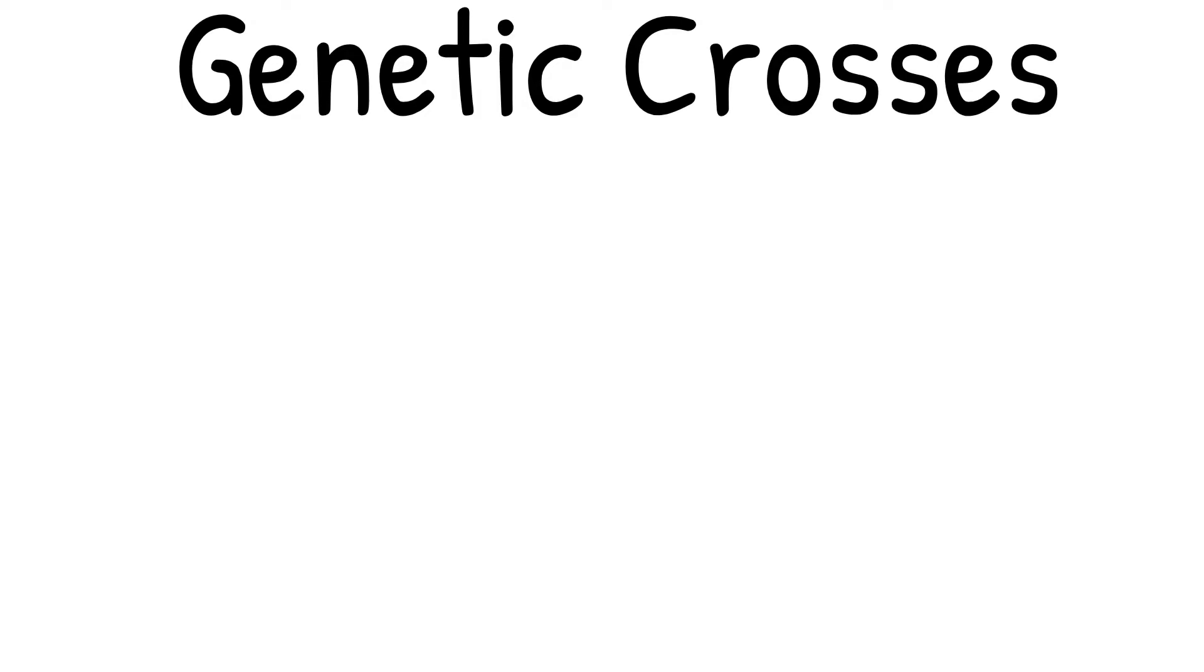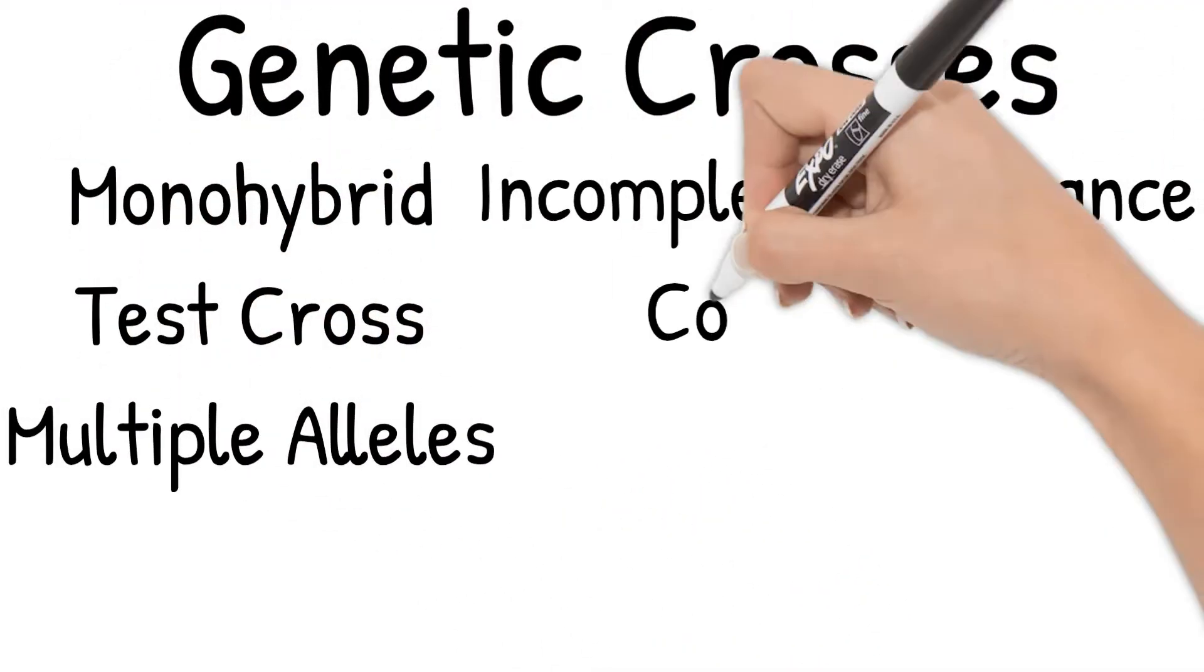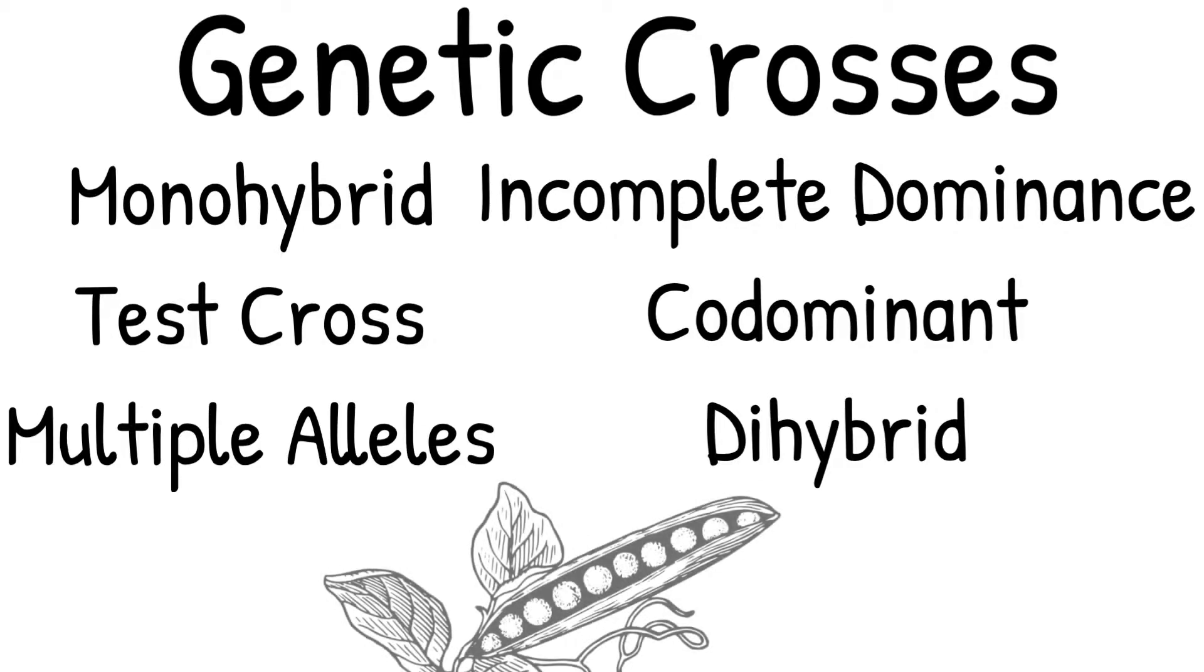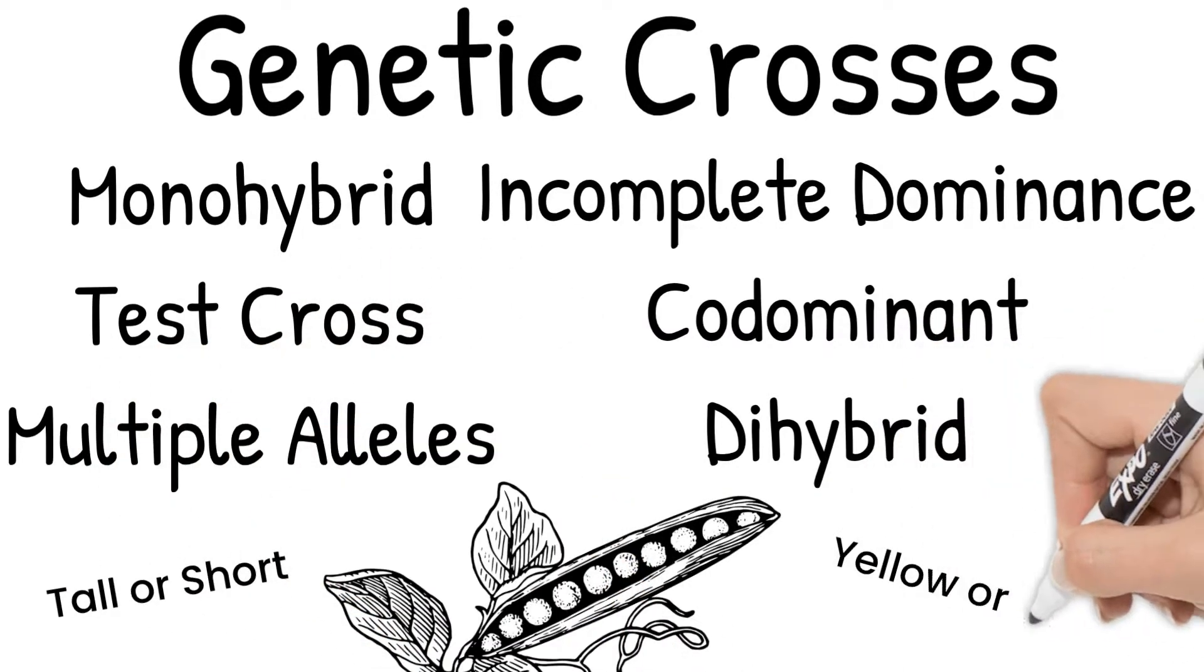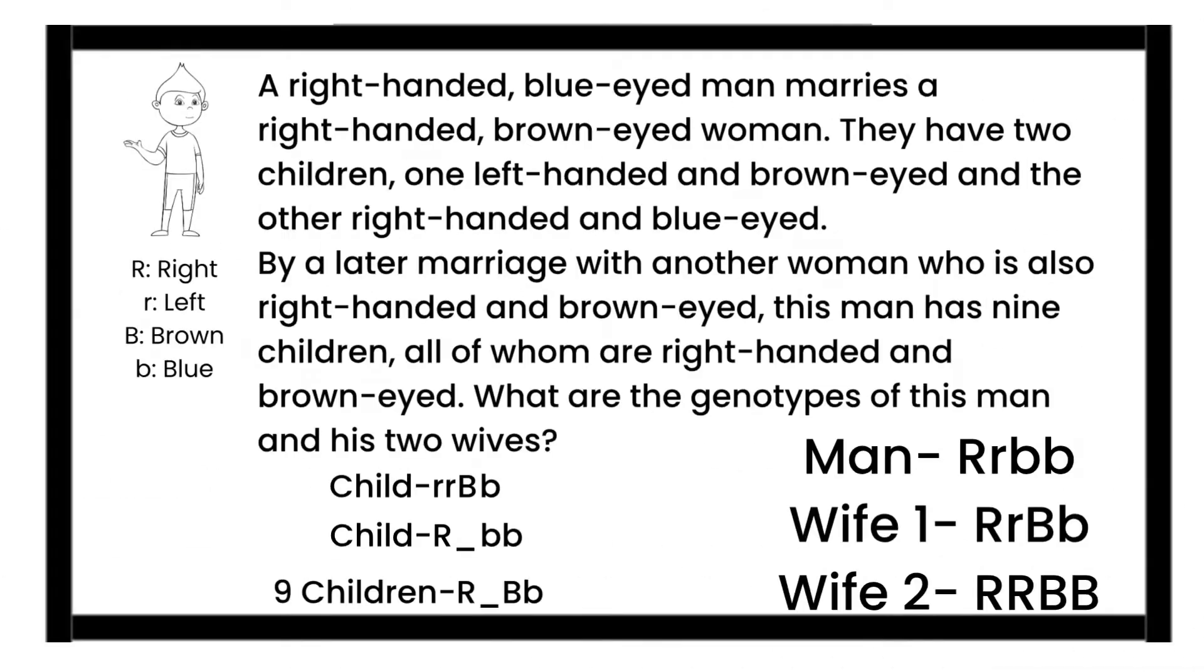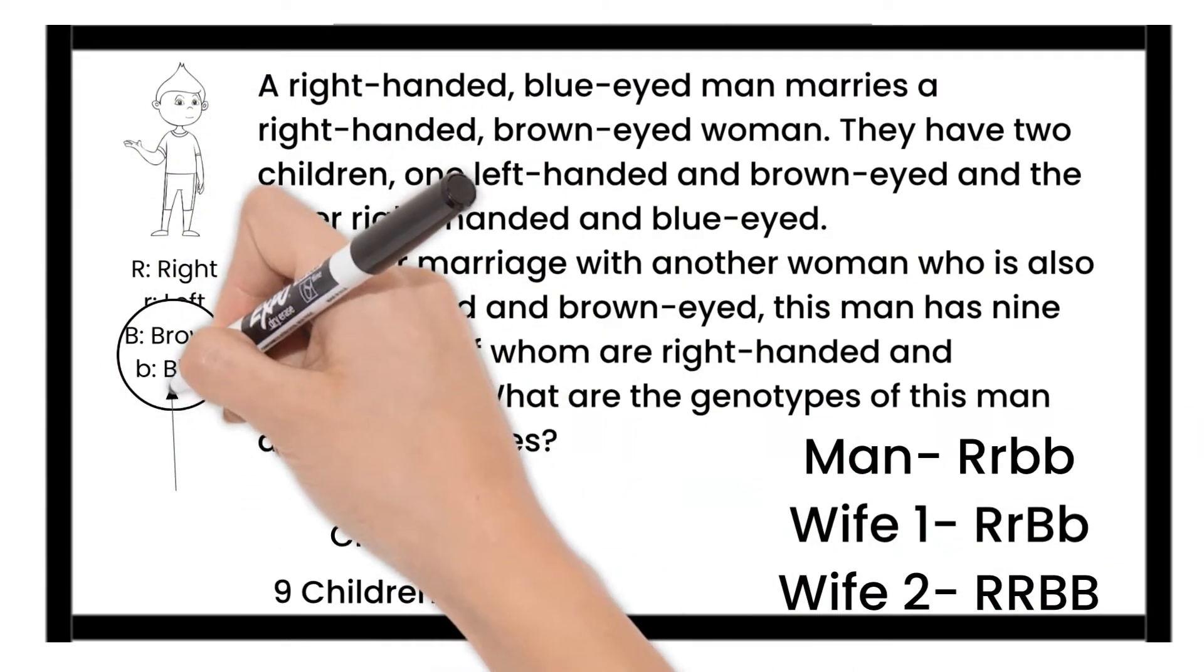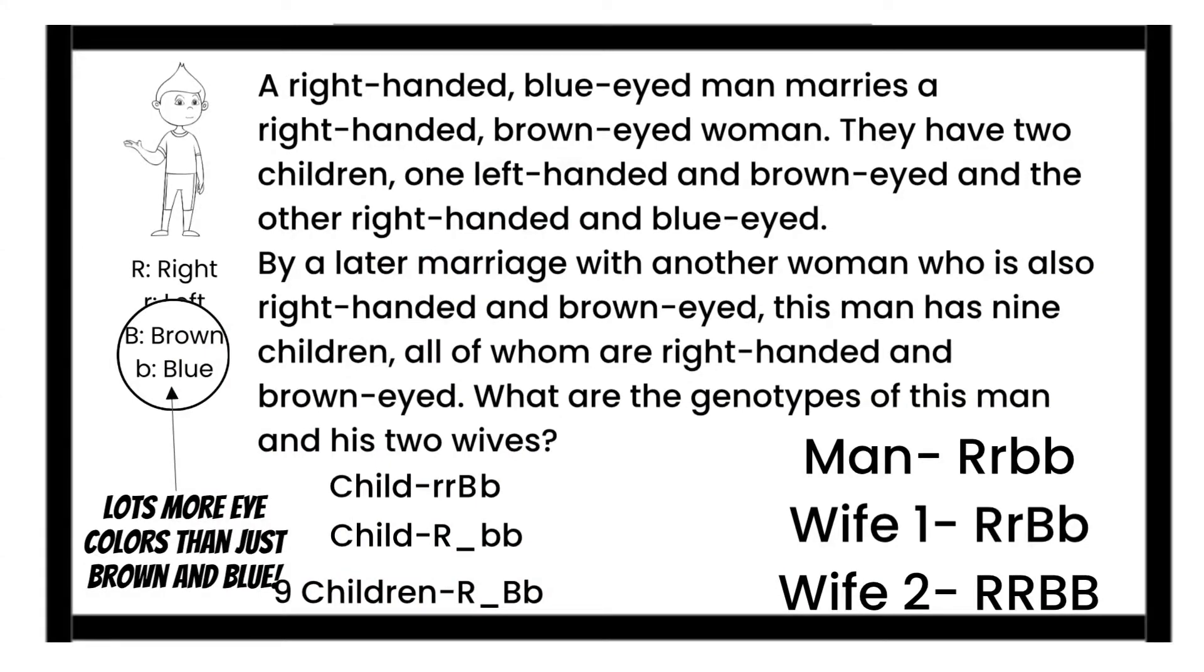Now, in our genetic cross videos, we kept the genes pretty simple. Some genes are that simple and straightforward, such as in Mendel's peas. They're either tall or short, yellow or green, and so forth. Some genes we simplified to make the questions a bit easier or to show a certain concept. This video will look at a couple more unique types of genes.